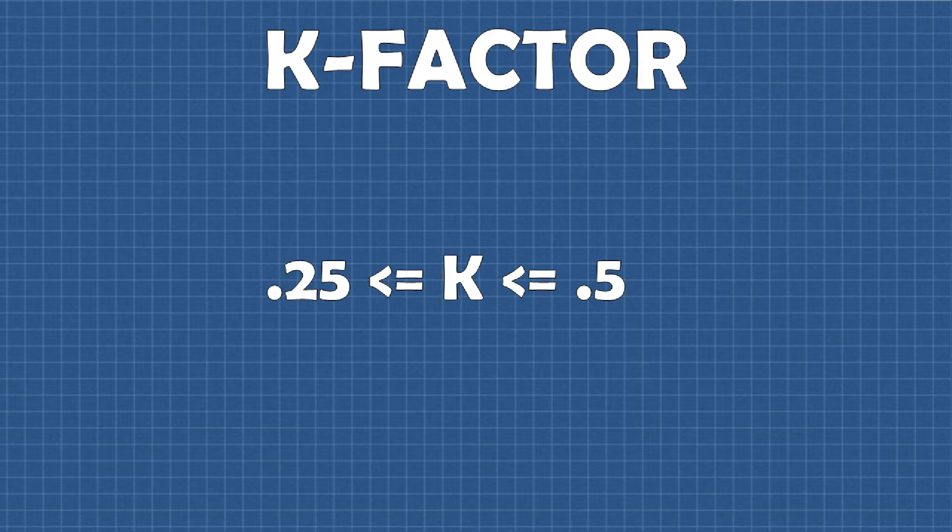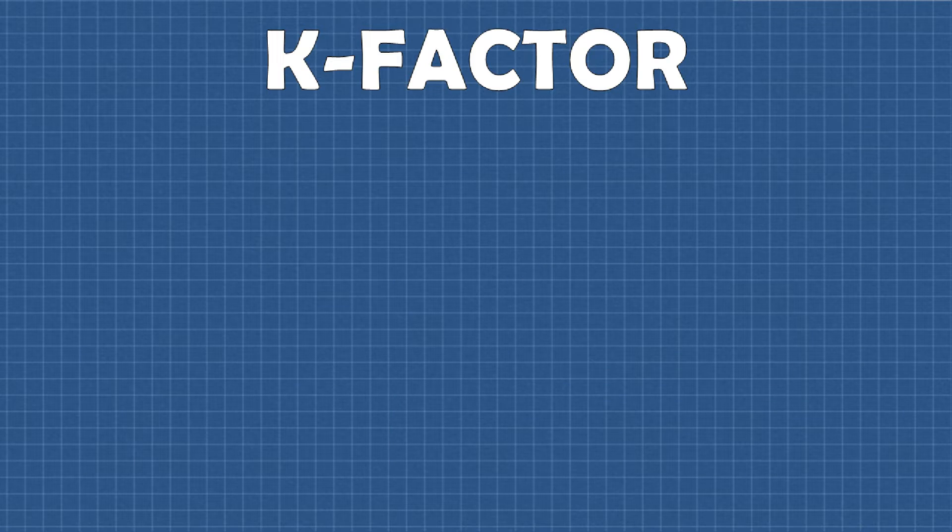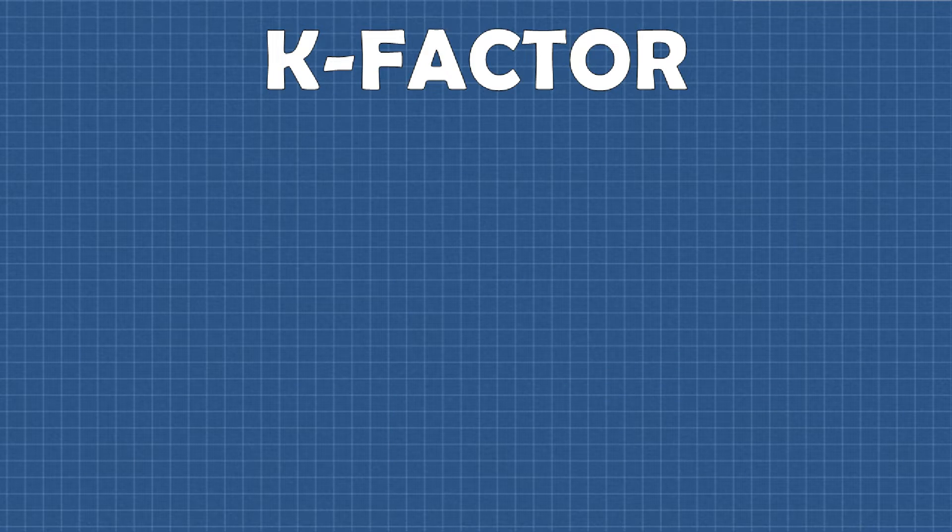K-factor values usually range between 0.25 and 0.5, with a smaller value resulting in a shorter flat length. Now I think for many people that's where their understanding of k-factor ends, so let's take a deeper dive.